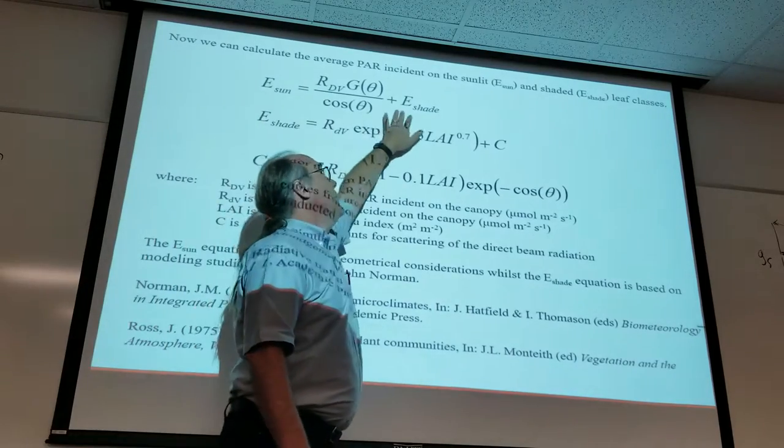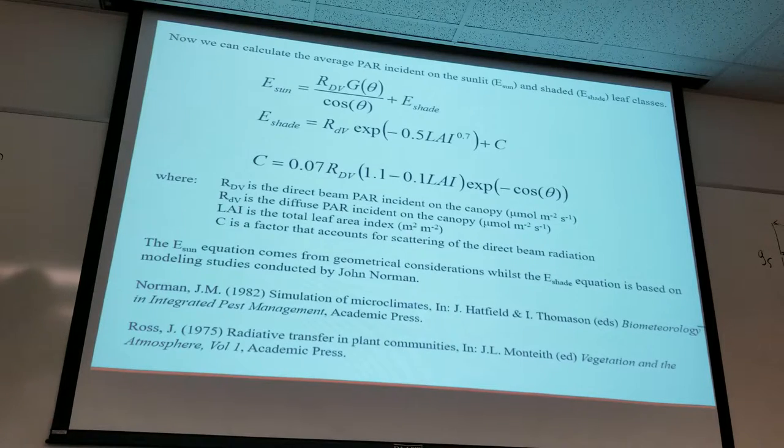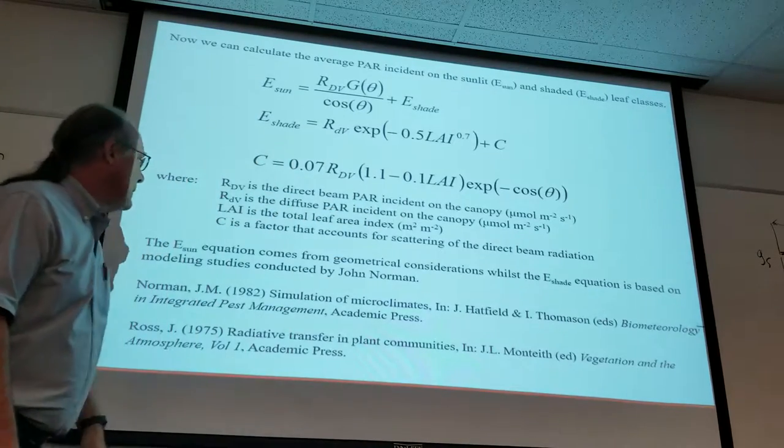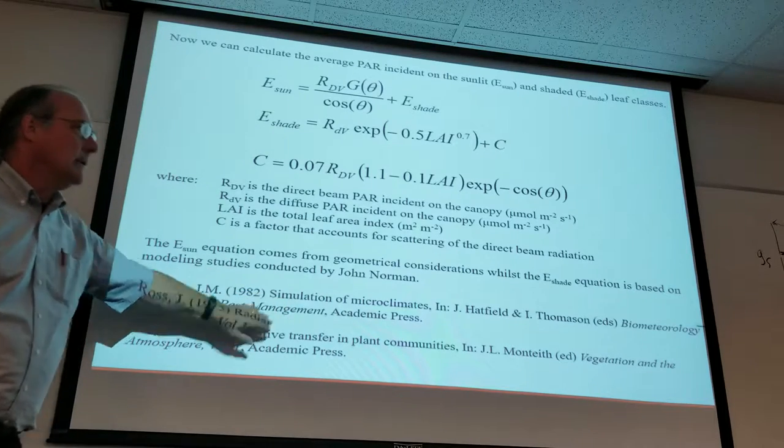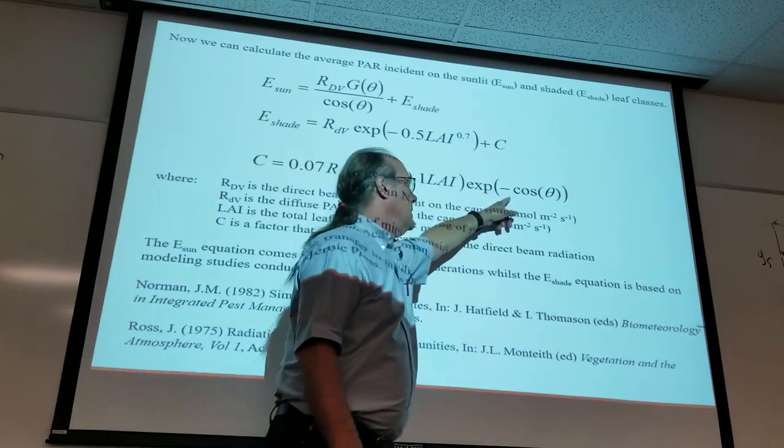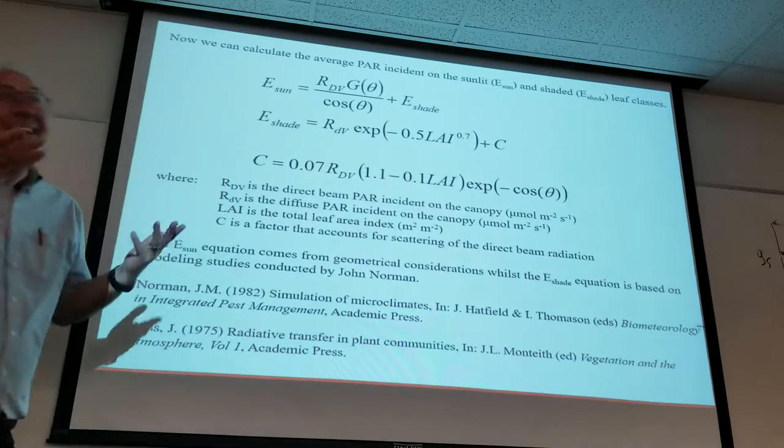He came up with a way to estimate the direct illumination of a plant canopy based on geometry, trigonometry, all that kind of stuff. This shaded fraction and this C term come from John Norman's work with his canopy model called Cupid. I asked him one time where this equation came from, because it looks kind of like, how'd you come up with that? And he said, oh I don't know, it just seemed like it fit the data. That was his response. So there you go.